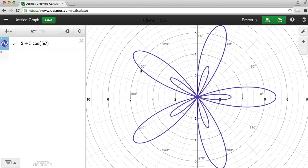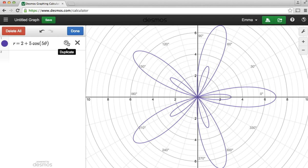In order to do that, first we're going to duplicate our graph. So to duplicate our graph, we go to this little gear button, edit list, and we hit the duplicate button. So we have a second version of our equation.